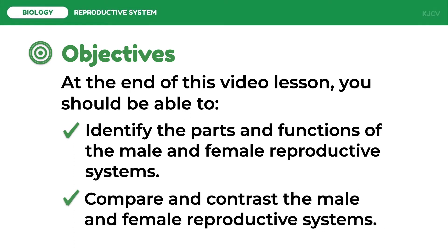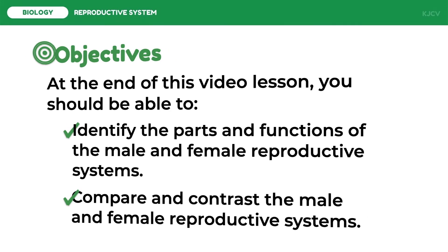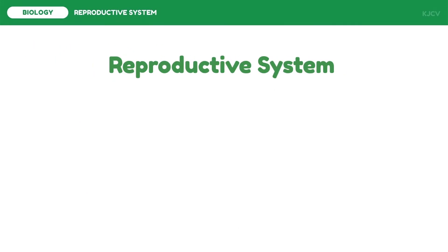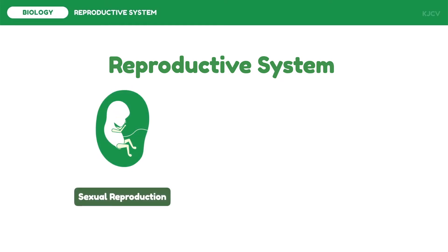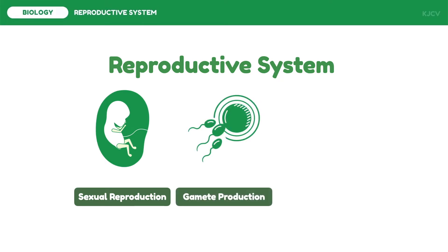The reproductive system mainly functions for the survival of species through sexual reproduction. This means that there should be the union of gametes, particularly the egg cell of females and the sperm cell of males. To satisfy the function of the system, the system also functions in gamete production.